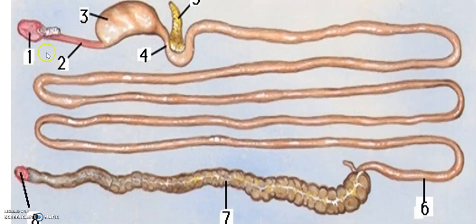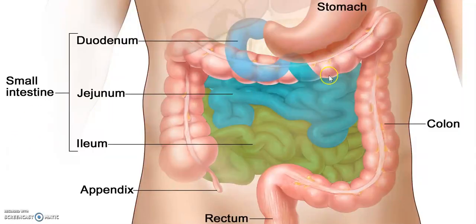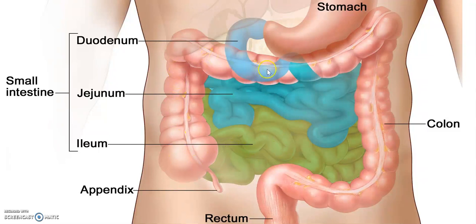This is how our gut looks — the alimentary canal right from the buccal cavity, the salivary glands, the esophagus, the stomach, and the U-shaped structure where the liver and pancreas are attached to the small intestine. The small intestine then enters the large intestine, followed by the rectum and the anus. In the small intestine, absorption and digestion take place, then the food enters the large intestine where absorption of water and salts takes place.